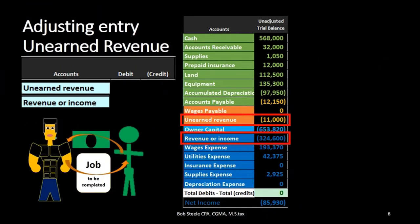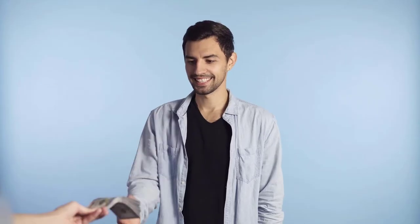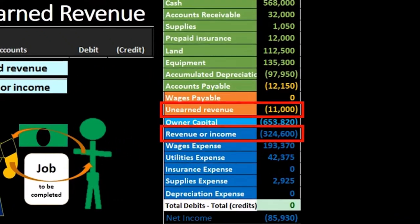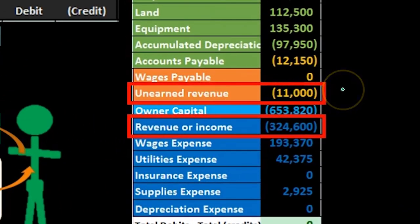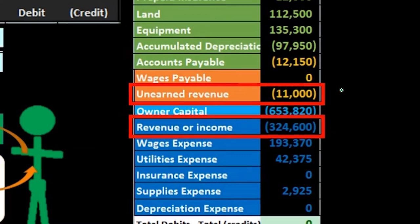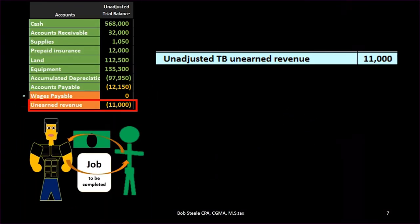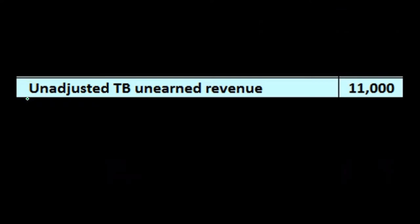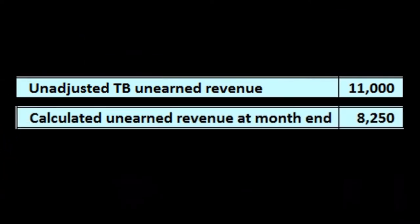That might happen in the case where we need to buy materials for a job and we want to get a security deposit, so we might get money before we do the work. Then at the end of the time period, what we need to decide is how much of this unearned revenue — money we have received in cash but not yet earned — has now been earned. A book problem will typically give us the number that unearned revenue should be at the end of the time period. So we take the unearned revenue from the trial balance of $11,000, and the problem tells us the amount still unearned as of the end of the period is $8,250.